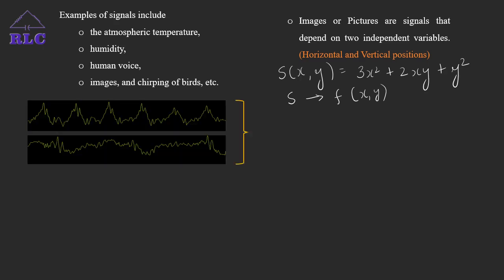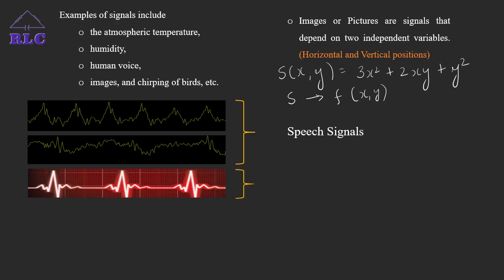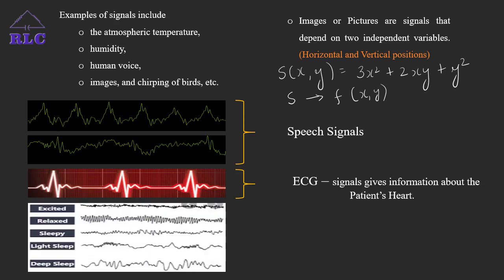Speech signals are a function of time which has many sinusoids with varying amplitude, frequency and different phases respectively. ECG — electrocardiogram — these signals give information about the patient's heart. EEG — electroencephalogram — these signals give information about the various activities of the brain. Different neurological conditions of the brain can be obtained by EEG signals. So speech signals, ECG signals and EEG signals are functions of one independent variable, i.e., time, and are classified as one-dimensional signals.